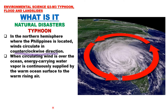In the northern hemisphere, where the Philippines is located, winds circulate in a counterclockwise direction — opposite to the movement of clock hands.